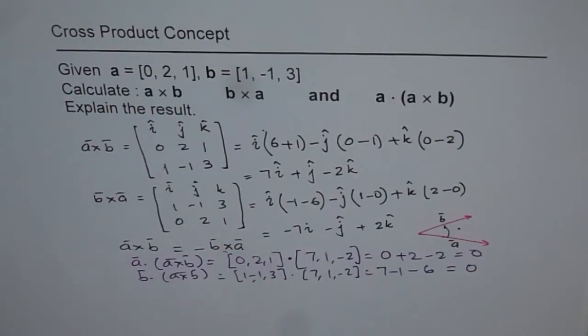This is very important to understand. And second part is that A cross B actually equals minus B cross A. The two vectors are opposite to one another.